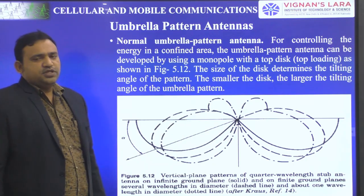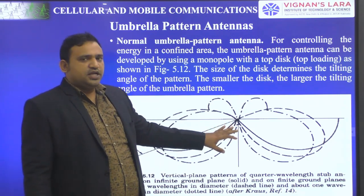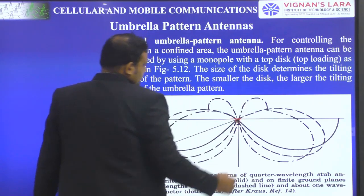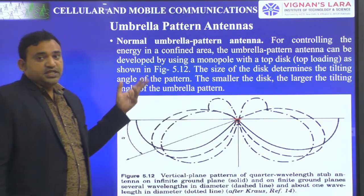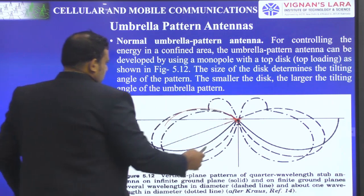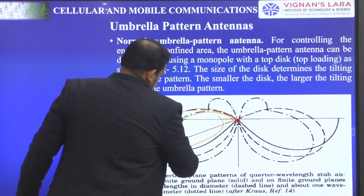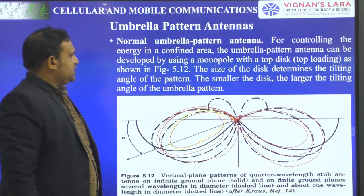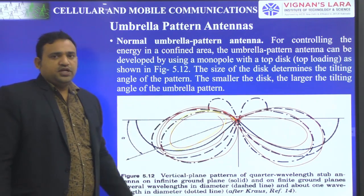An umbrella pattern antenna is developed by using a monopole with a top disc, as shown in figure 5.1. We have to assume there is a disc with a small projection. The size of the disc determines the tilting angle of the pattern — the smaller the disc, the larger the tilting angle. The size of the umbrella pattern depends upon the size of the disc, and as the tilting angle changes, the umbrella pattern changes.